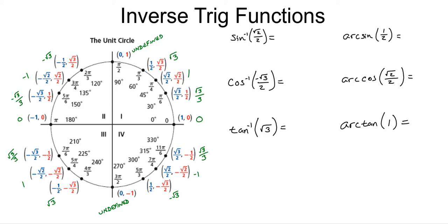The inverse cosine is always between 0 and pi, so it will always give us a radian measure in either the first or second quadrant. The inverse tangent, like the sine, is between negative pi over 2 and pi over 2, so it will also be somewhere in the first or fourth quadrant.